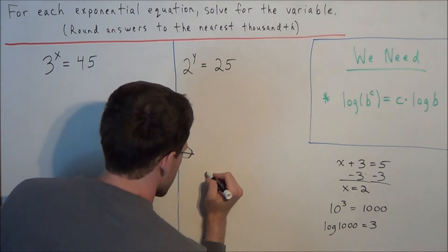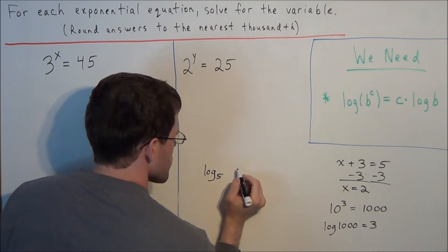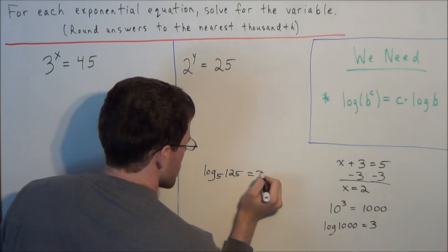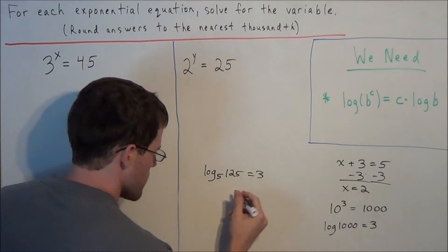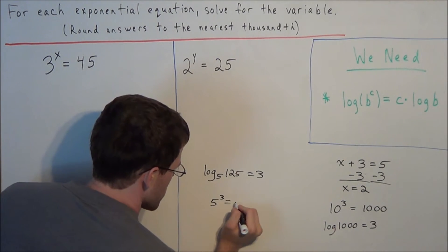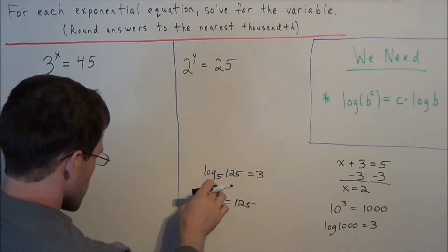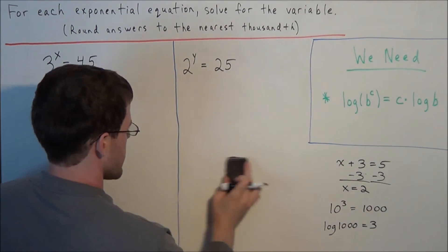If it was a different base, they would say something like log base 5 and we would have something like 125 equals 3. And if it was a log base 5, all this means is 5 to the third equals 125. So if there's no number written next to the log, no subscript, automatically base 10.